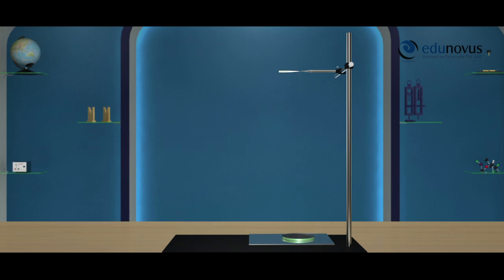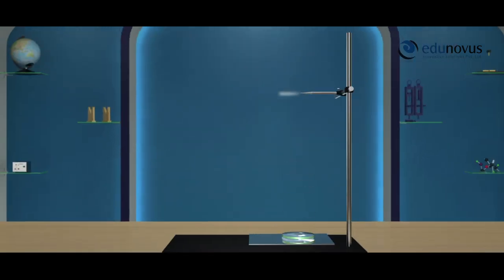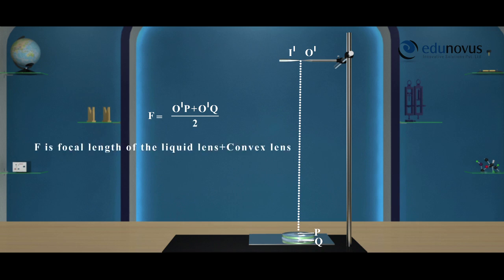Keeping the setup as it is, remove the lens and pour few drops of liquid and place the convex lens on top of the liquid. This arrangement forms a plano-concave liquid lens. While looking into the lens, adjust the object needle so that it forms a sharp and clear image. Now measure O'P and O'Q. The mean of O'P and O'Q gives the focal length of the lens with liquid.